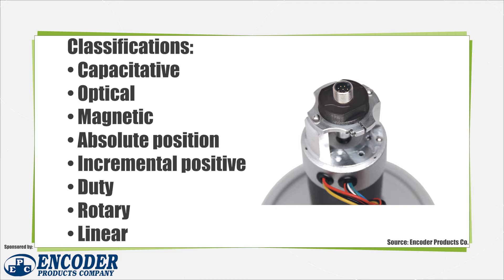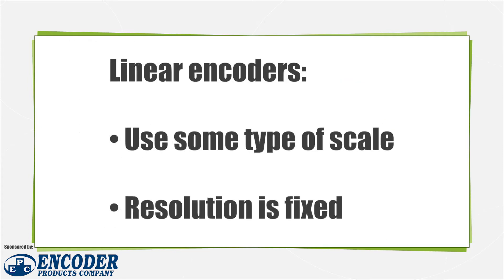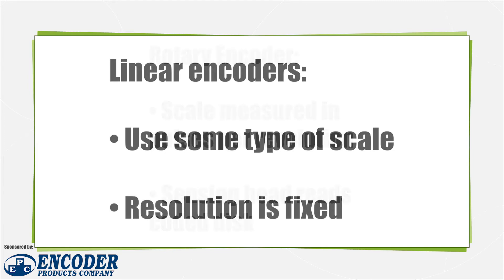Another quite common way encoders are classified is whether they are rotary or linear in nature. Linear encoders typically are made up of a scale, such as a coated strip, and a sensing head. Reading the space between the scale coating determines position. The resolution of linear encoders is measured in pulses per inch or millimeter. The scale typically has a fixed resolution with embedded markings, which is read by the sensing head.